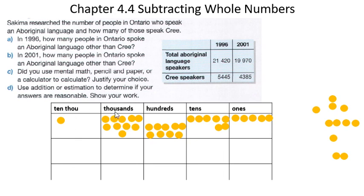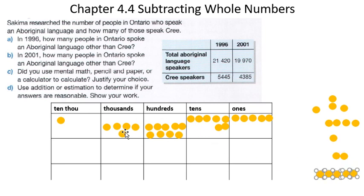So I have ten one-thousands here, and I'm going to remove five of them — one, two, three, four, five. And I'm left with one ten-thousand, five thousands, nine hundreds, seven tens, and five ones.